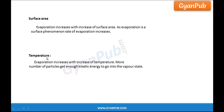Coming to temperature, it also plays an important role in the evaporation phenomenon. Evaporation increases with the increase of temperature. By increasing temperature, the rate of evaporation increases, as more number of particles get enough kinetic energy to go into the vapor state. This is also explained by the clothes-drying example — we dry clothes under sunlight where the temperature is more, so that the water particles on the surface gain kinetic energy, go into vapor state, and the clothes are dried.